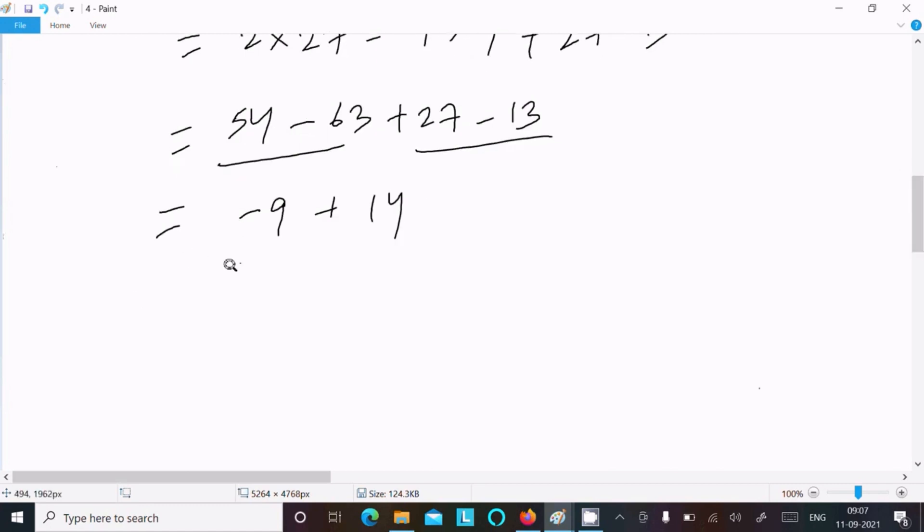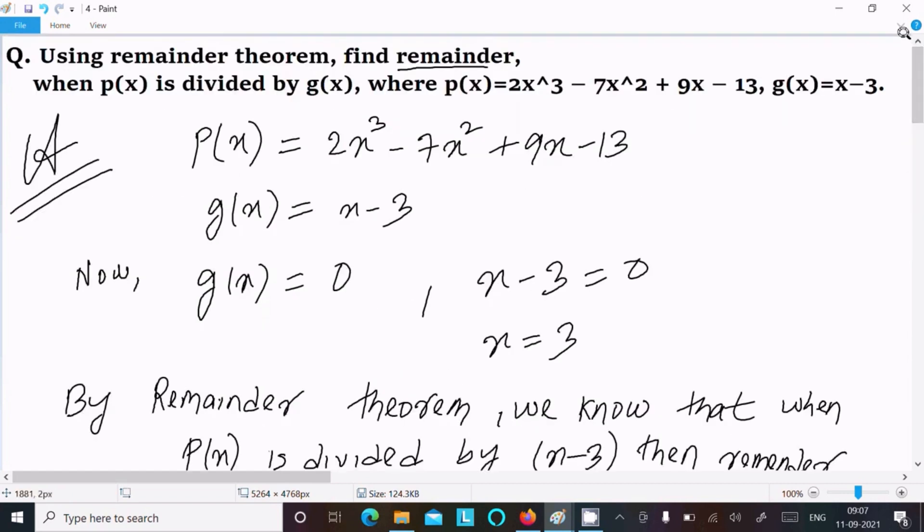And here if you subtract this, this becomes 5. So p(3) is now 5. Hence, the remainder is 5. So this is the answer.